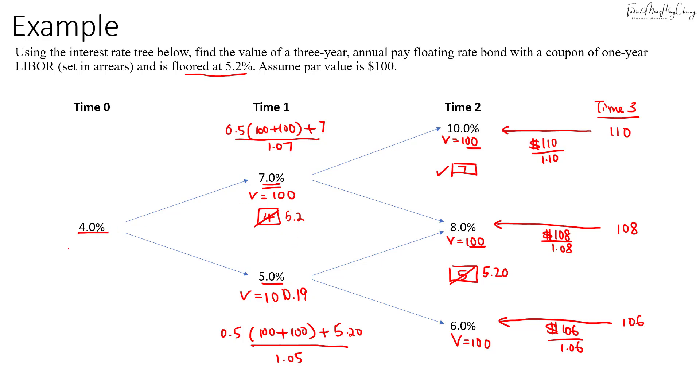Lastly, we'll discount it back to the previous period at 4%. The value of the floating rate bond will be 0.5 multiplied by 100 plus 100.19, plus the coupon of 5.20, then we discount that at 4%. That will give us a value of $101.245.